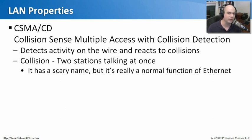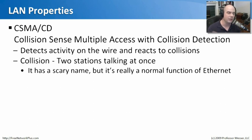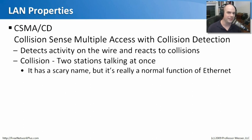They don't want to send traffic out at the same time somebody else is sending traffic, because if that happens, the signals are going to collide with each other and neither side will be able to understand what happens — you've now got corrupted data on the wire. When those two stations talk at once, we refer to them as collisions, but they are really a normal function of ethernet.